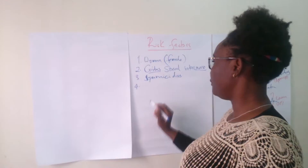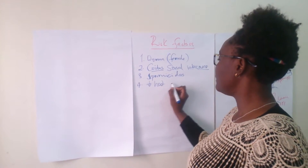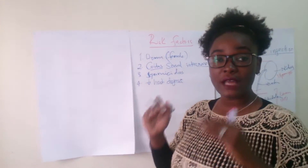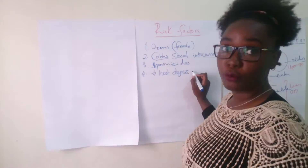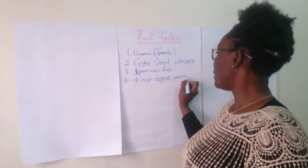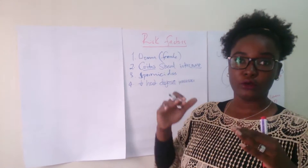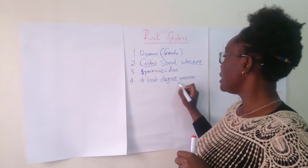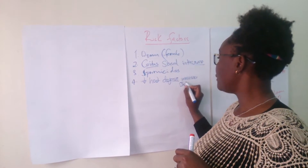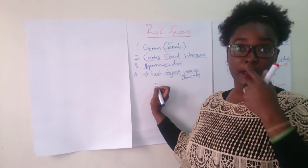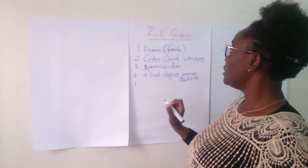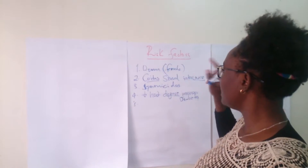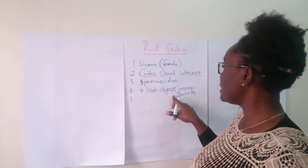The next risk factor is reduced host defense factors, which could be because somebody is immunocompromised. Being immunocompromised could be because someone is HIV positive, has cancer, or is using lots of steroids. Diabetes could also be a cause of reduced host defense factors. Another risk factor is certain hygiene practices — specifically, wiping from back to front instead of front to back after using the toilet.